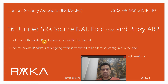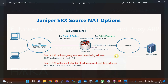With source NAT, all users with private IP addresses can access the internet. By configuring a pool of public IP addresses, the source private IP address of outgoing traffic is translated to the IP address configured in the pool. In the previous section, we discussed different types of NAT and started the configuration of source NAT. We have two options: translating to the outgoing interface IP address, which we configured previously, or translating to an IP address taken from a pool, which will be discussed in this section.